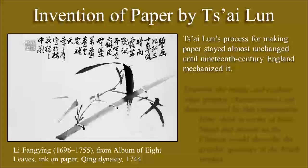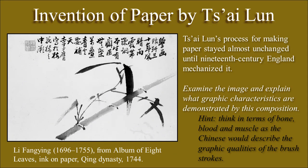Now let's talk about the invention of paper. Dynastic records indicate the inventor of paper was Sai Leung, a high government official in 105 AD. Whether he really invented paper or if he perfected a current invention is not known. In earlier times, Chinese wrote on bamboo slats or wooden strips. What is important to note is that Sai Leung's process for making paper stayed almost unchanged until 19th century England mechanized it. Paper was not only made for scrolls or documents, but was also used for wrapping paper, wallpaper, toilet paper, and napkins by the Chinese.